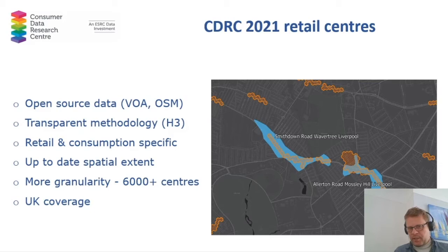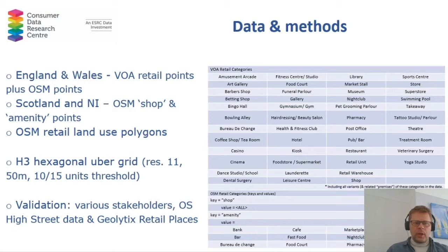In the same spatial extent, we have about eight retail centres as opposed to only two previously. For the new version of retail centres 2021, we used mainly the VOA — Valuation Office Agency — retail points data, which were available for England and Wales. There were almost twice as many VOA points as OSM — OpenStreetMap — retail points data. For Scotland and Northern Ireland, we did not have access to VOA data, which is why we only used the OpenStreetMap data. We used shops and different amenity points.